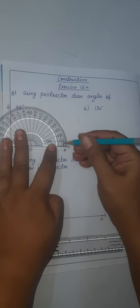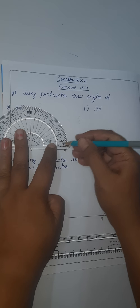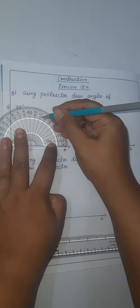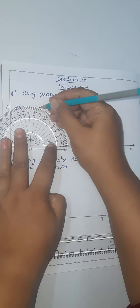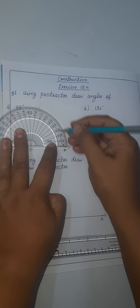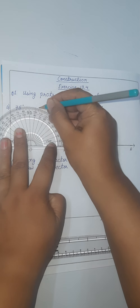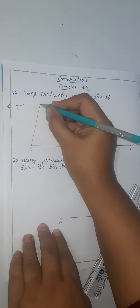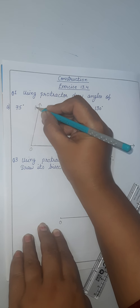We have to see the inner reading because 0 starts from here. Here this is 75 degrees — this is 0 degrees and here this is 75 degrees. So let's mark it and join this point. Here this is our 75 degree mark.